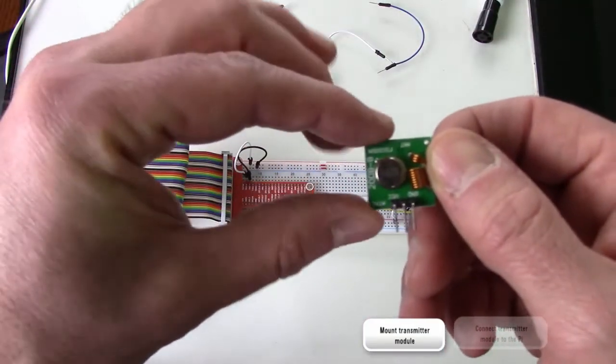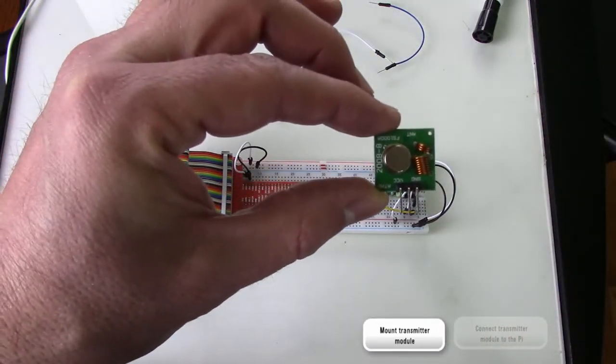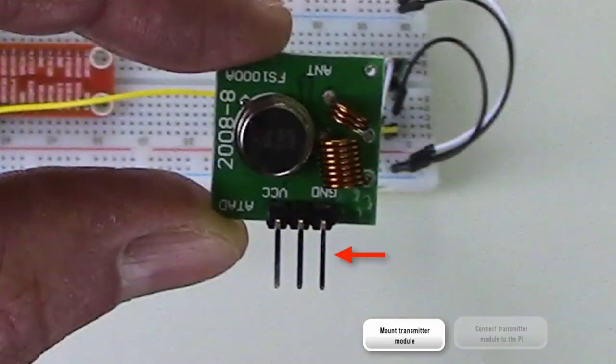Let's take a quick look at the transmitter module. It has three pins: ground, supply voltage labeled VCC, and the data pin labeled ATAD on this module.